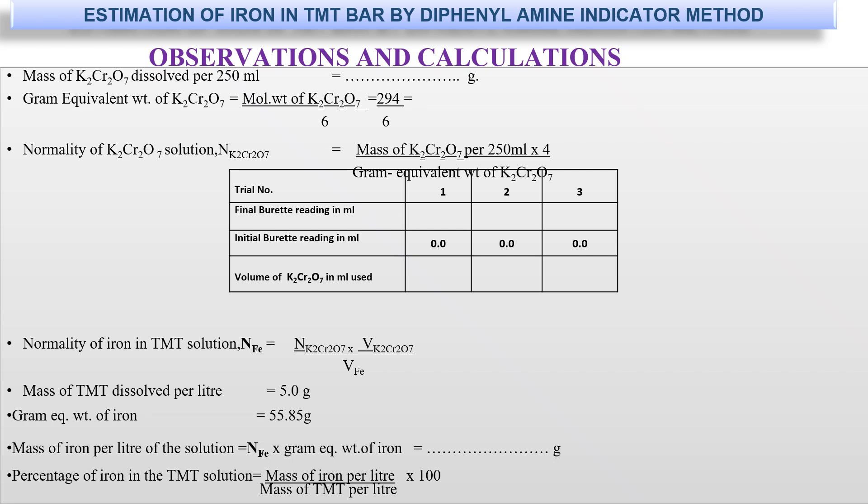For the observation and calculation, we record the mass of potassium dichromate dissolved per 50 ml, the gram equivalent weight of potassium dichromate, and its normality. From the normality of the TMT solution, the mass of TMT dissolved per liter is 5.0 g. The gram equivalent weight of iron is 55.85. The mass of iron per liter equals the normality of iron in TMT multiplied by the gram equivalent weight. The percentage of iron in TMT equals the mass of iron per liter divided by the mass of TMT per liter, multiplied by 100.